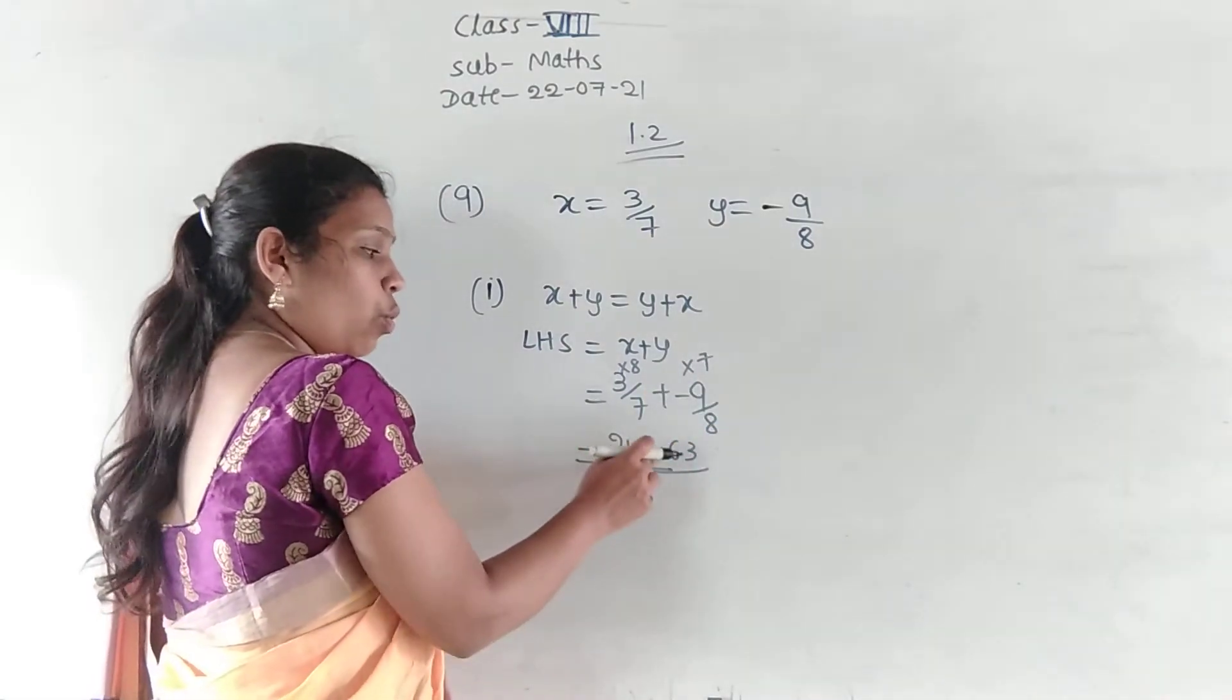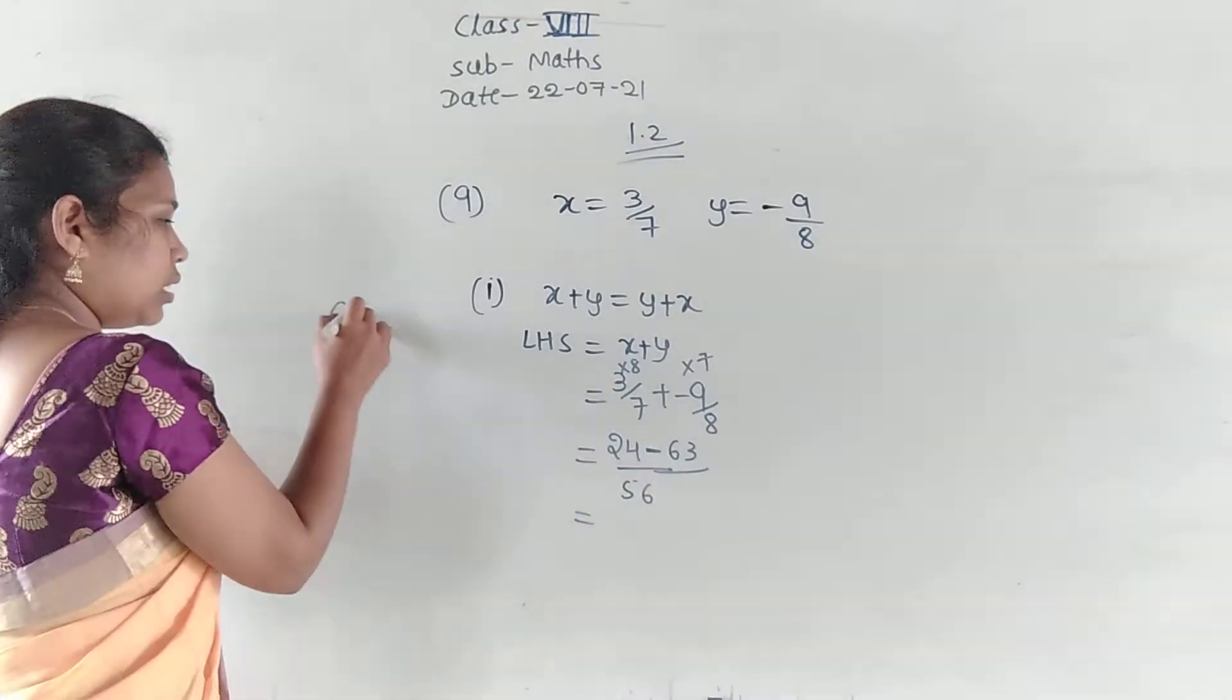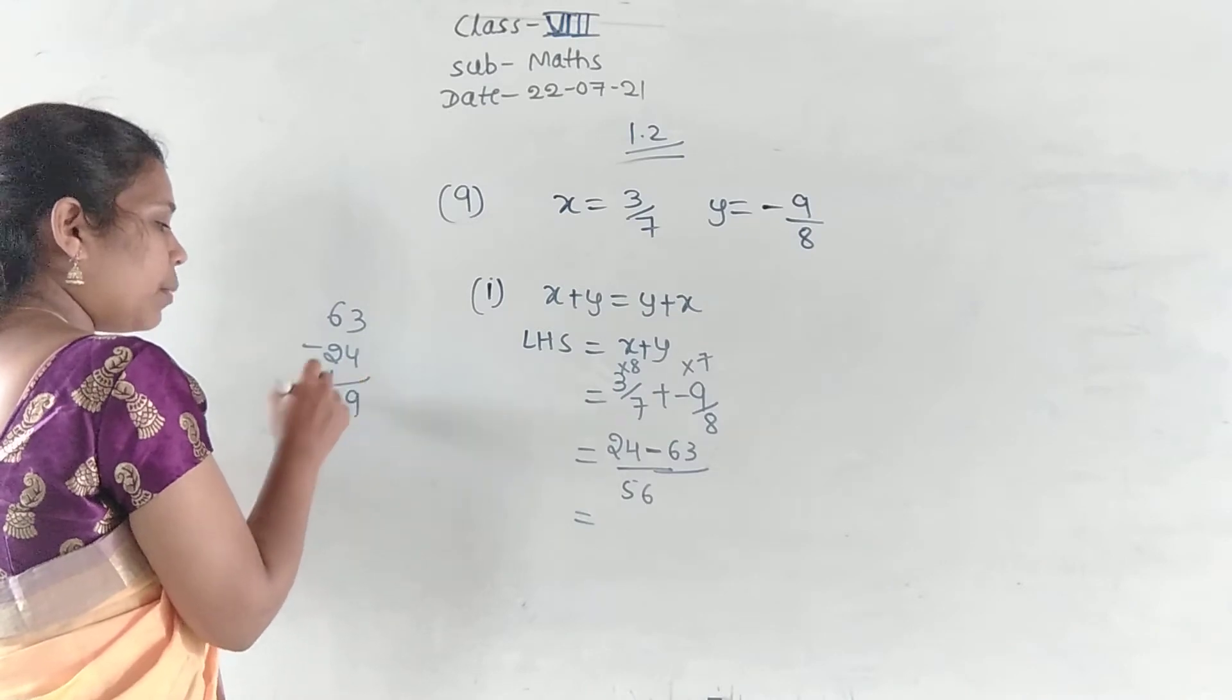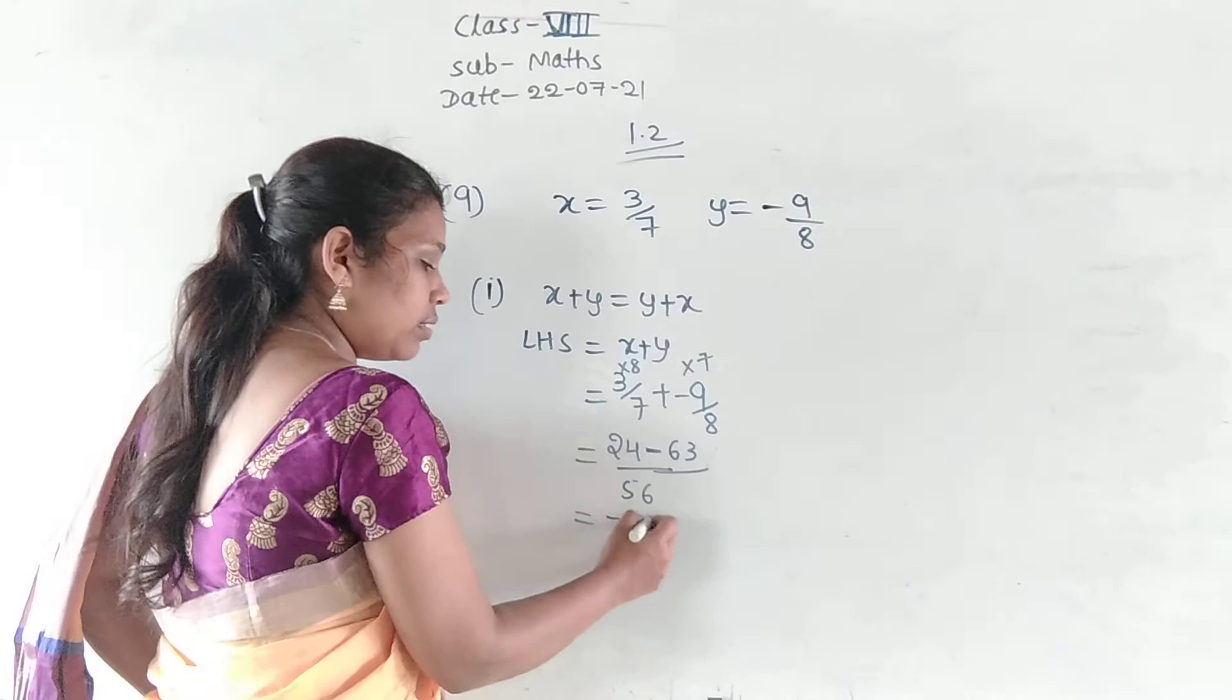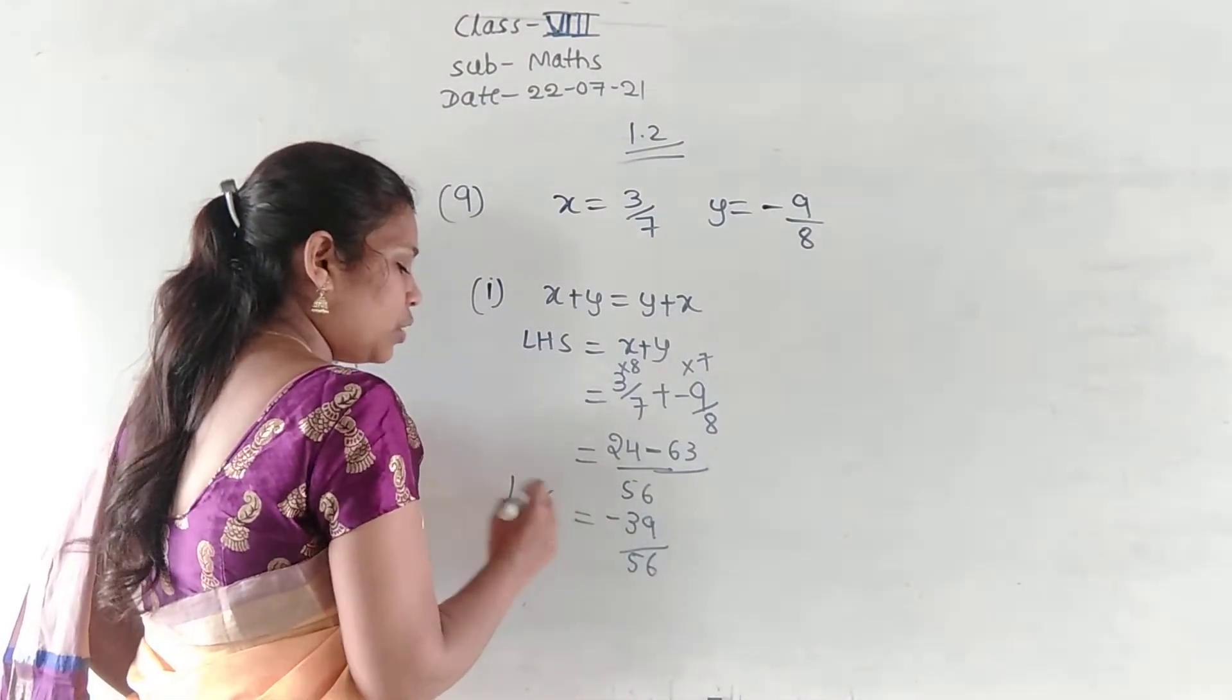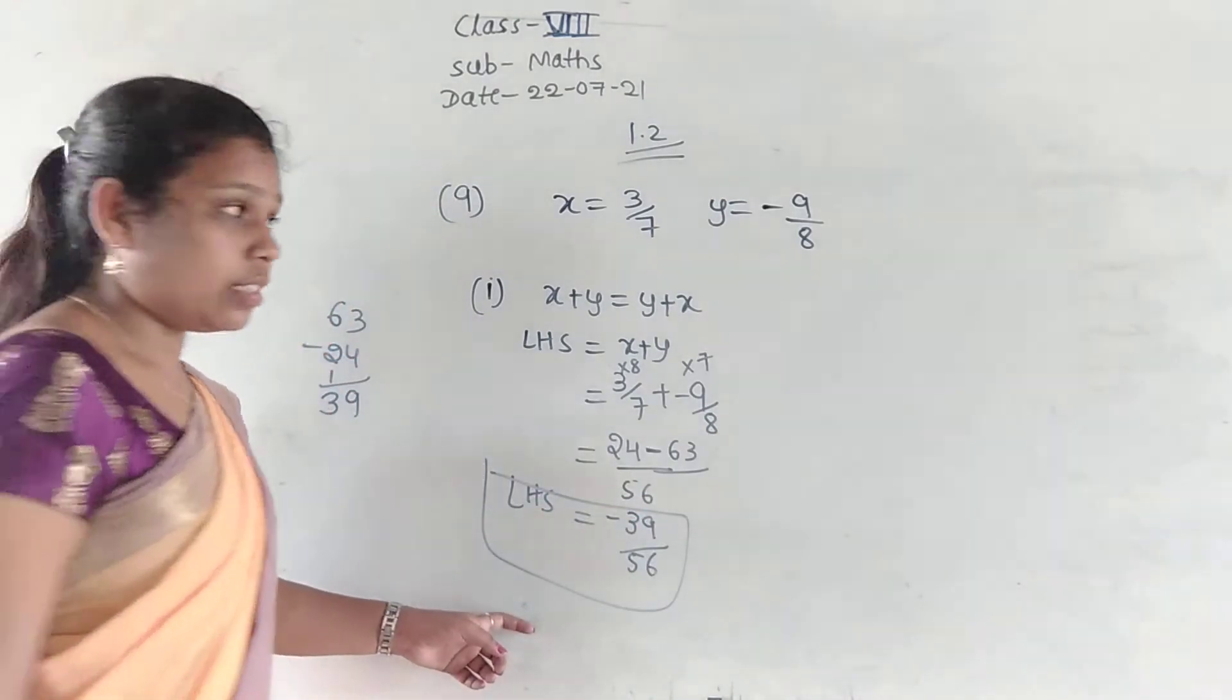So, plus and minus. Then we need to subtract the values. So, 63 minus 24 is 39. That will be minus 39 divided by 56. What is the LHS value here? LHS value is minus 39 divided by 56.